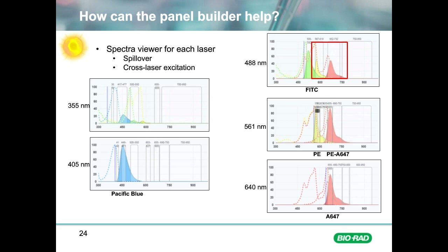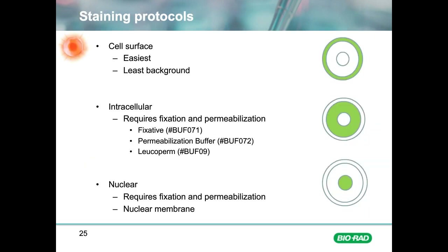Next, we will discuss staining. There are some basic considerations for all staining. First, stain your sample in a small volume to avoid excessive dilution of your antibody — a good place to start is 1 million cells in a volume of 100 microlitres, although you may need to optimise this for your particular cell type. If possible, stain your sample on ice.